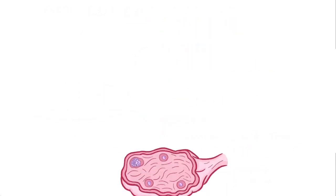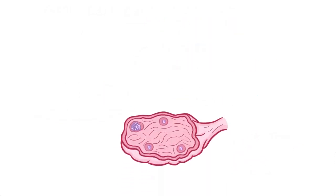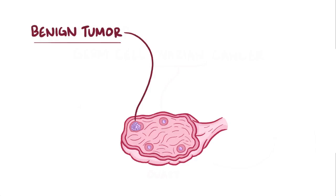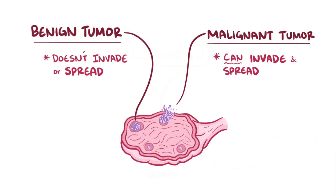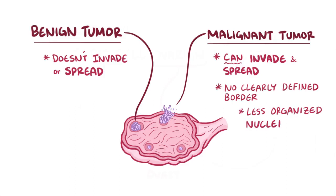Now if those germ cells in the ovaries start to divide uncontrollably, it can either form a benign tumor — which means that it doesn't invade nearby tissue or spread to other parts of the body — or it can be a malignant tumor, which means that it can both invade and spread to other tissues. Compared with benign tumor cells, malignant tumor cells have key features like not having a clearly defined border or slightly less organized nuclei.